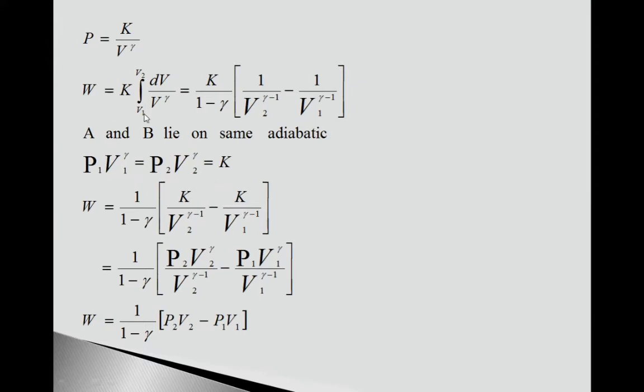So W equals 1 upon (1-γ) in bracket. Here K, K upon V2^(γ-1) minus this K upon V1^(γ-1). So is equal to 1 upon (1-γ) in bracket. Now put here value of this K.